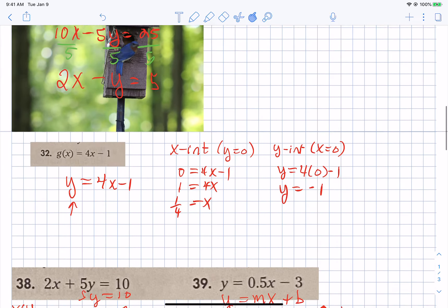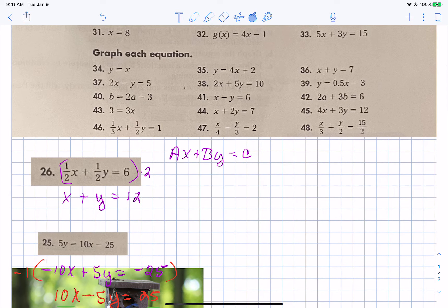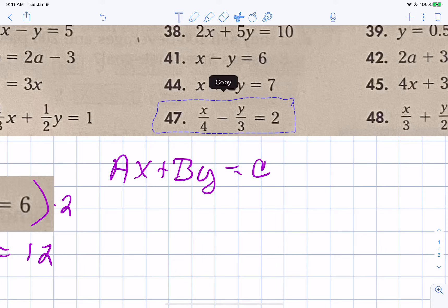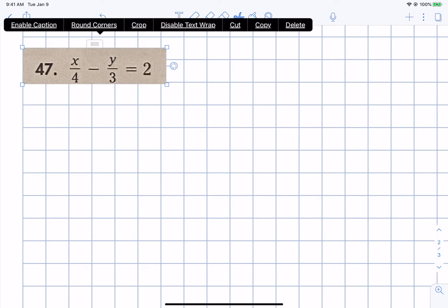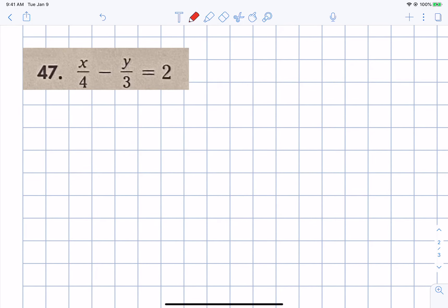Now I would like to do one that has fractions in it. Let's do 47. Now, if somebody said Mrs. Hott graph this for me, the first thing I would do is I would get rid of the fractions. So I would multiply through by the common denominator of the fractions we see in the problem. Can any of you tell me what is the common denominator? You can tell me verbally or you can put it in the chat bar. What would the common denominator of those fractions be? Delilah, what you got?